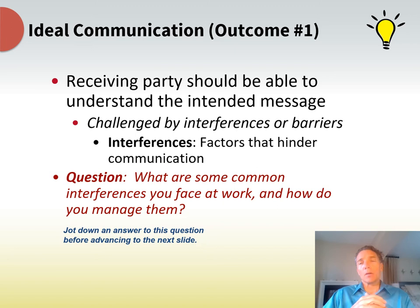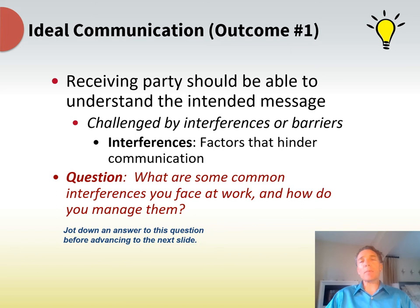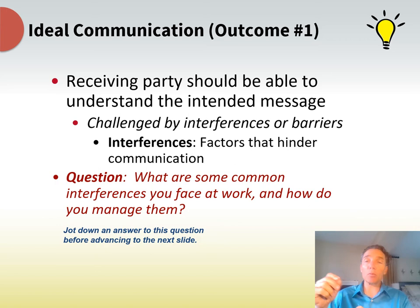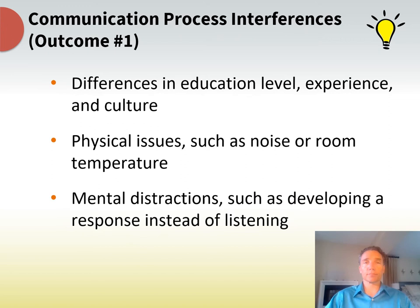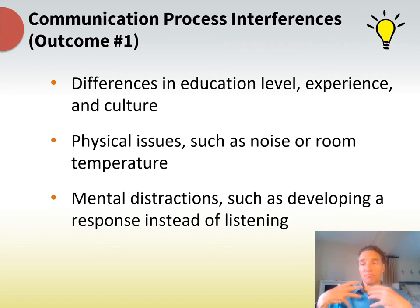In the ideal world, the receiving party understands your message and has everything they need to execute it — it's not vague, not unclear, and is in a positive tone. What prohibits that? Interferences — factors that hinder communication. It could be that you're distracted, somebody else is on their phone, the timing is bad, or you're holding a meeting right after lunch and everybody's tired. Think about all the different interferences you face at work and how you manage them. This could be one of your discussion questions on Canvas.